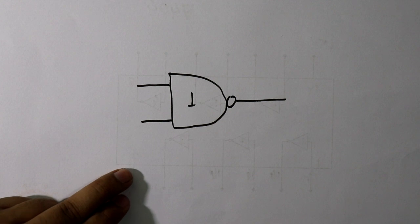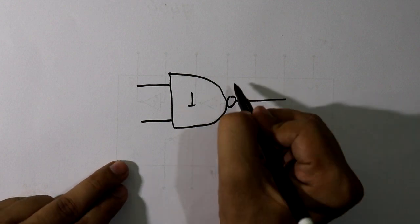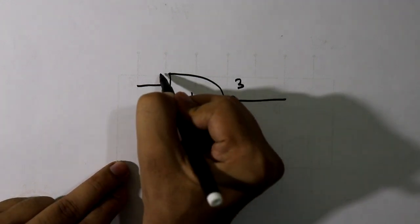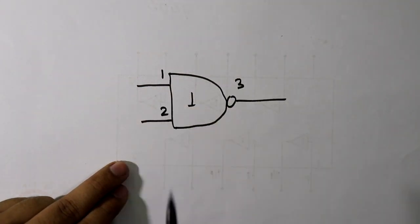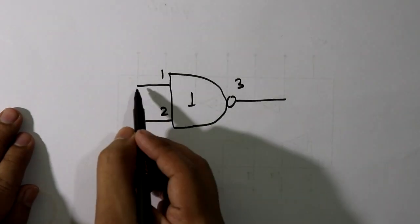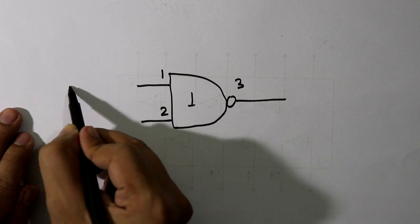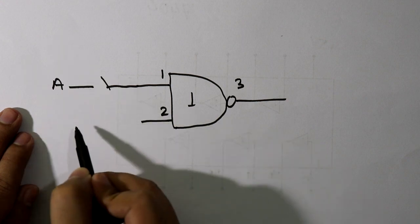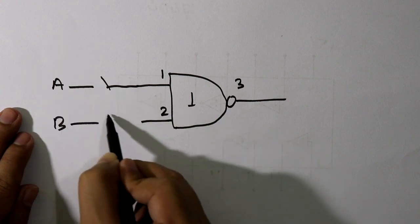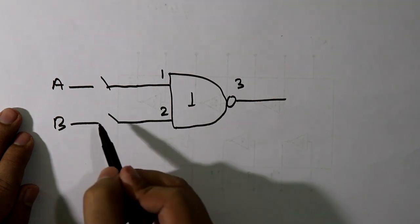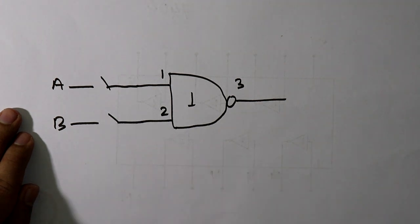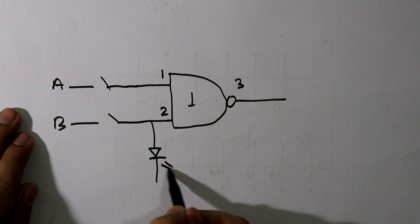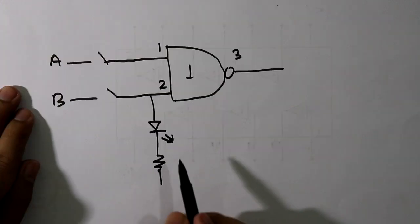So here it is pin number 3, pin number 1, and pin number 2. With pin number 1 we will connect one input switch. Here it is our input A, here it will be our input B, and we have to connect one input switch, and one LED here.